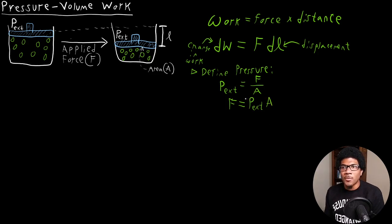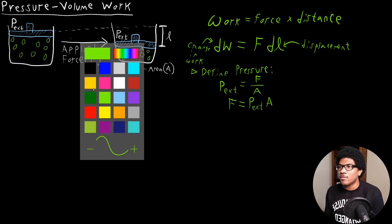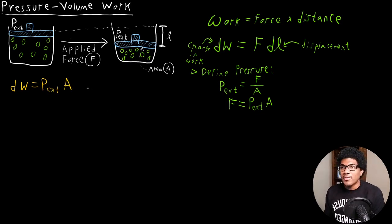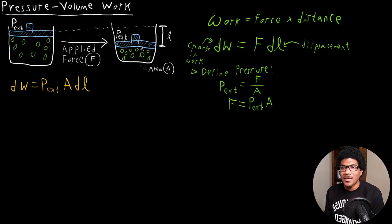Now that we have this force, we can plug it back into our equation for the change in work. So the change in work becomes P external times A times DL. All I've done is substitute our expression for force in terms of the external pressure.